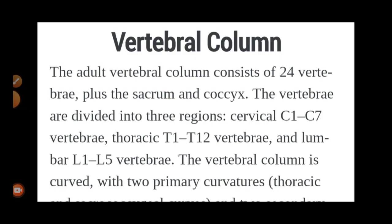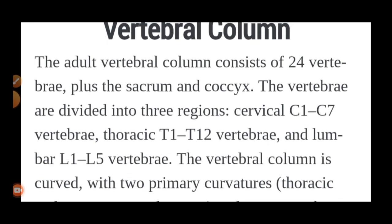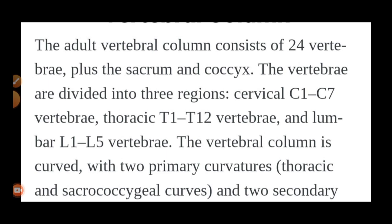So what is meant by the vertebral column? The adult vertebral column consists of 24 vertebrae plus 1 sacrum and 1 coccyx. So the adult has 24 vertebrae, 1 sacrum, and 1 coccyx. The vertebrae are divided into mainly three regions.